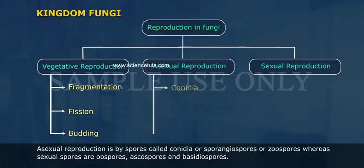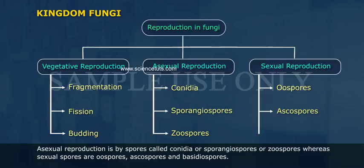Asexual reproduction is by spores called conidia, sporangiospores, or zoospores, whereas sexual spores are oospores, ascospores, and basidiospores.